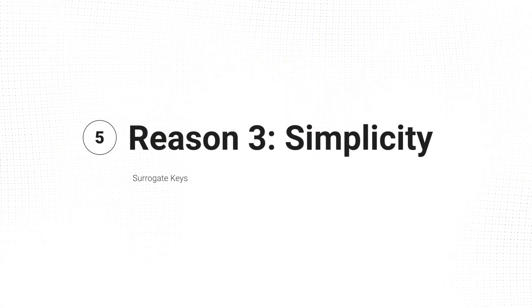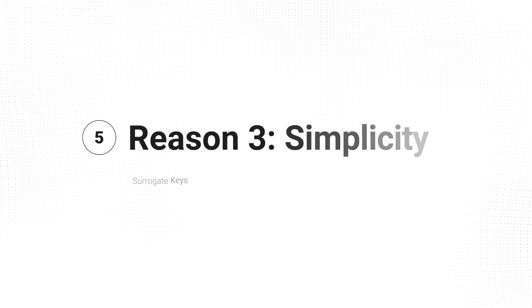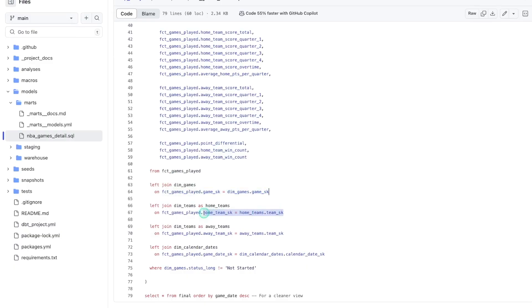All this leads to the third point, which is simplicity. When you're able to stamp a surrogate key value in a fact table — when you get to the marts layer — you know that you can very easily join in a dimension by just looking at the surrogate key join. You don't have to do a lot of complicated things to figure out which value was available during a certain date. It's already established. You've already done the hard thinking and the logic of the join inside the fact table.